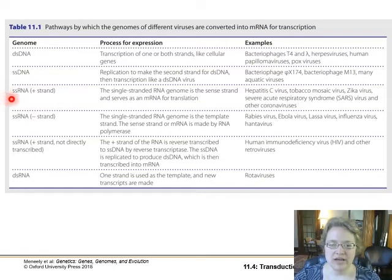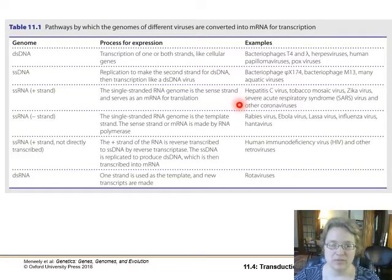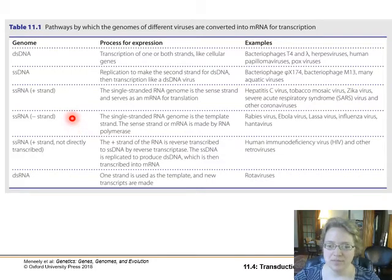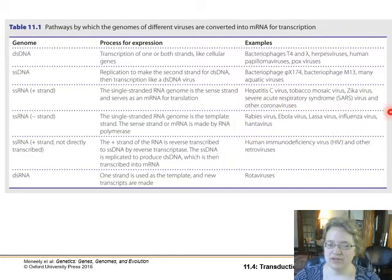We've got single-stranded RNA where it's the plus strand — the sense strand — basically just like a messenger RNA getting inserted into the cell. Hep C, tobacco mosaic, Zika, SARS, and the coronaviruses are in this category, essentially inserting messenger RNA into the cell. We also have single-stranded RNA that's the antisense strand — the template strand — where RNA polymerase gets hijacked to make the messenger RNA. Rabies and influenza are in that group.